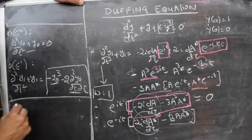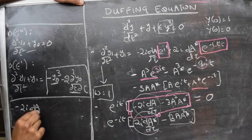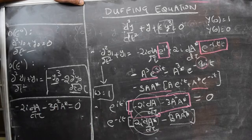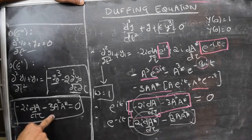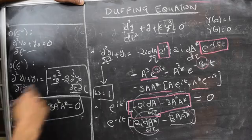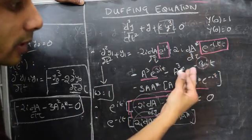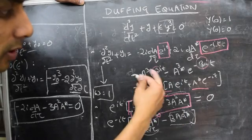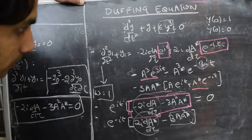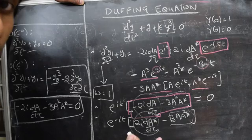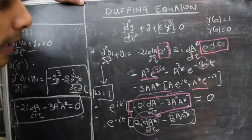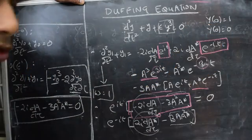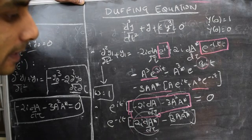What we require is: -2i·(da/dτ) - 3·a²·a* = 0. If this is zero, so is its conjugate. This is an ordinary differential equation for the complex function a(τ). Solving it ensures the right-hand side contains no forcing at ω=1 — only at ω=3, which is not the resonant frequency — guaranteeing y₁ remains bounded. This resolves the unboundedness problem encountered in regular perturbation expansion. Once a(τ) is found, we know y₀ after applying initial conditions. We'll work out these steps in the next part of the video.